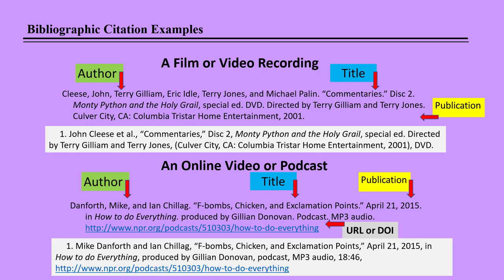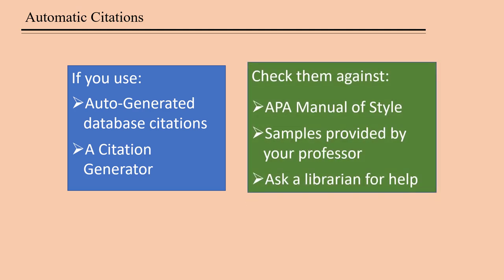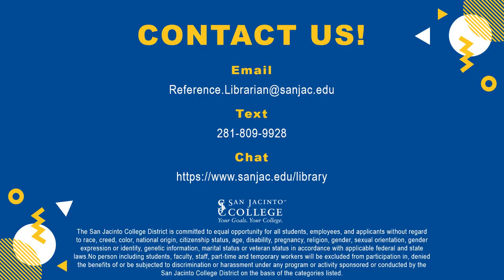The podcast changes from footnote to bibliographic citation are pretty standard as well: change the first author's name around, put periods where there were commas. If you use auto-generated database citations — the library databases will format citations for you, and they do a pretty good job — or an online citation generator, make sure you check those citations against a reputable source to make sure they're correct before turning your paper in. After all, those people aren't getting a grade for those citations, but you are.